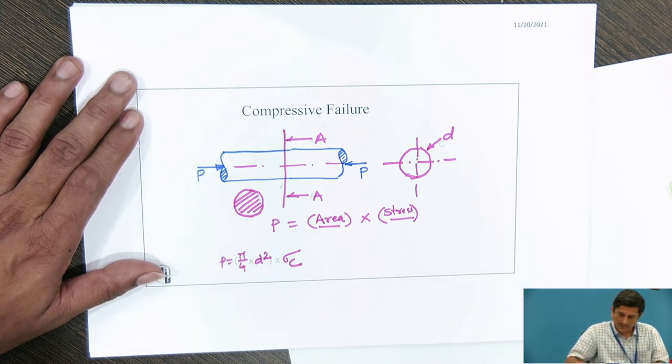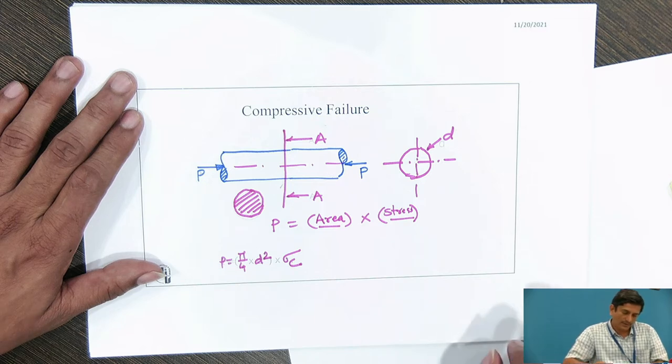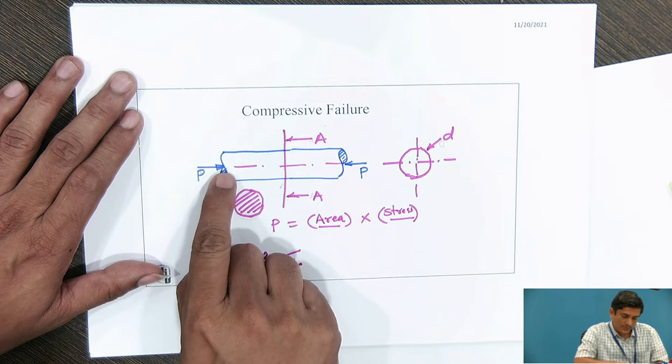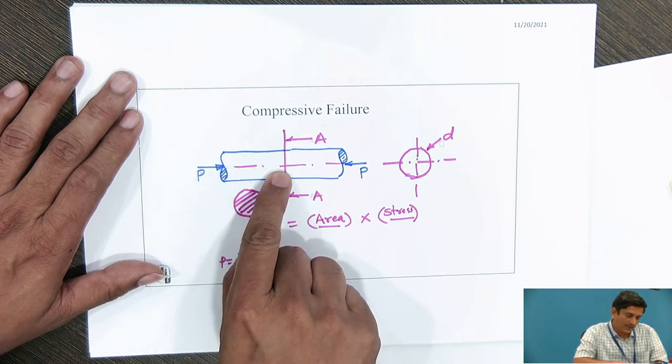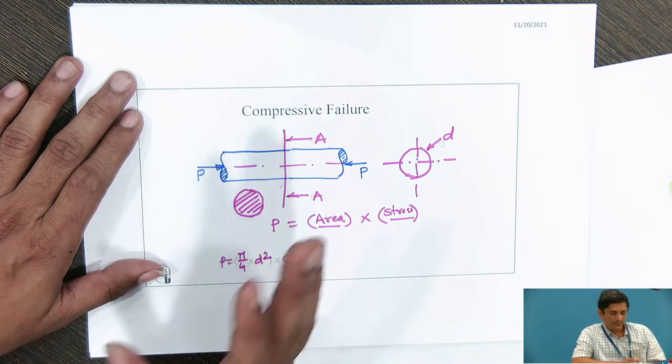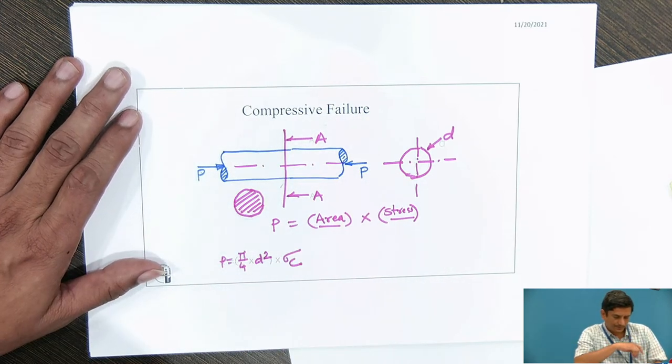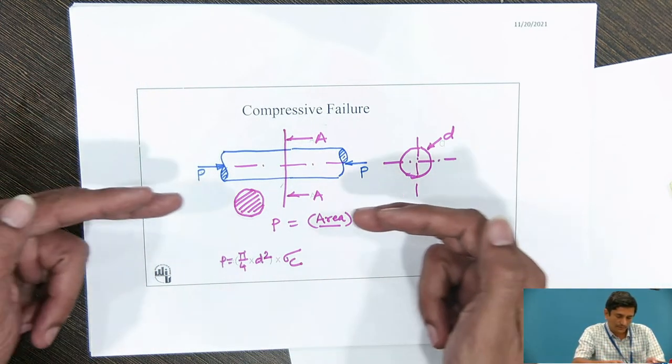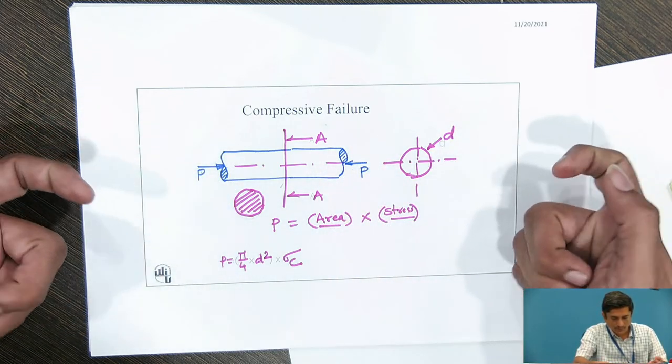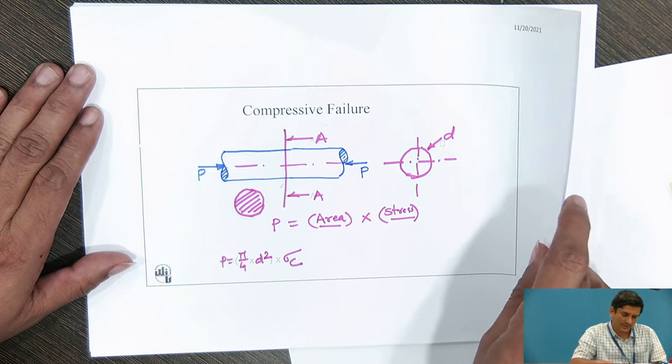Here also our thumb rule is that in compressive failure, the force is perpendicular to the area which is resisting the failure. However, if you compare with the tensile failure, the force is of push nature. In tensile, it was pull in nature. That is only the difference.